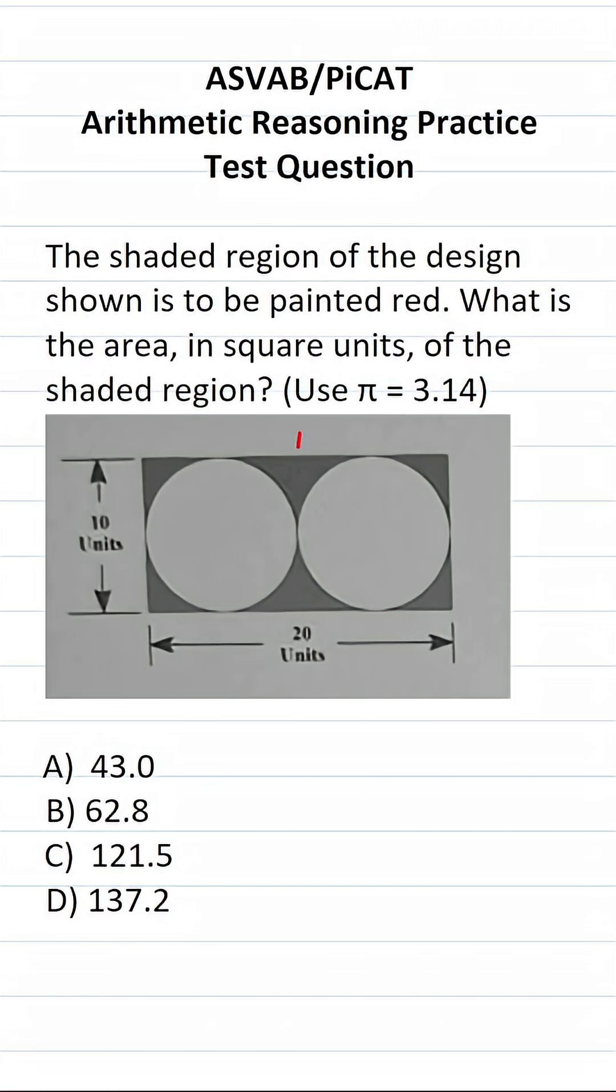So it's referring to this shaded region right here. If we look closer at this figure, we can see that we have a rectangle and inside the rectangle, we have two circles cut out from it. So to find the area of the shaded region, we're going to find the area of the rectangle, which is length times width minus 2. Why 2? Because we have two identical circles times the area of one of the circles. How do you find the area of a circle? Pi r squared.